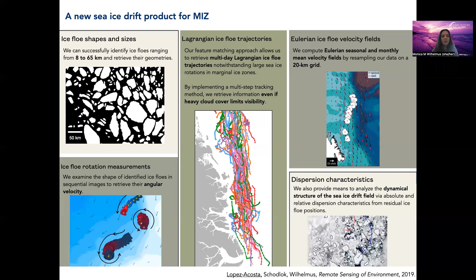A unique element of our product is that, given that we're able to examine the shape of identified ice floes in sequential images, we're able to retrieve their angular velocity. For the first time, we have a way to quantify how ice is rotating over time for long periods. In the lower left panel, you're seeing three examples of trajectories of three floes that we tracked and how they're rotating — the colors represent the level of rotation. We also compute Eulerian seasonal and monthly mean velocity fields by resampling our data on a 20-kilometer grid. Finally, we analyze the dynamical structure of the sea ice field by absolute and relative dispersion characteristics from residual ice floe positions.